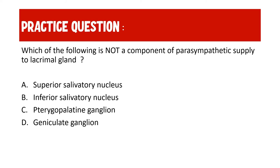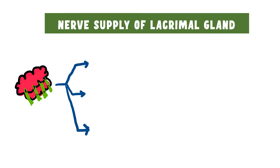On this journey we shall also be finding an answer to this question: which of the following is not a component of the parasympathetic supply to lacrimal gland? Is it superior salivatory nucleus, inferior salivatory nucleus, pterygopalatine ganglion, or geniculate ganglion? Join this journey of the nerve supply of the lacrimal gland and by the end of the video you shall find the answers.